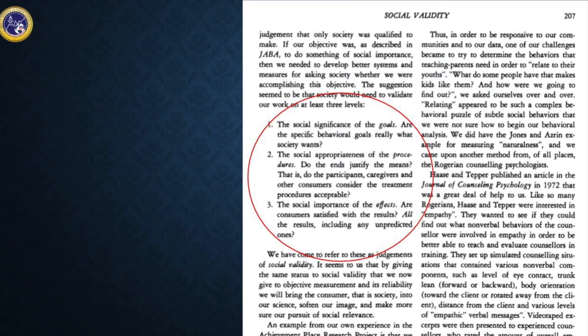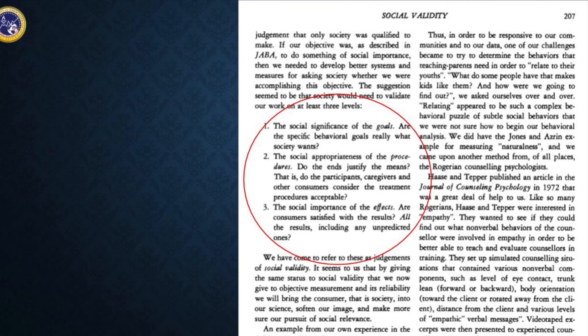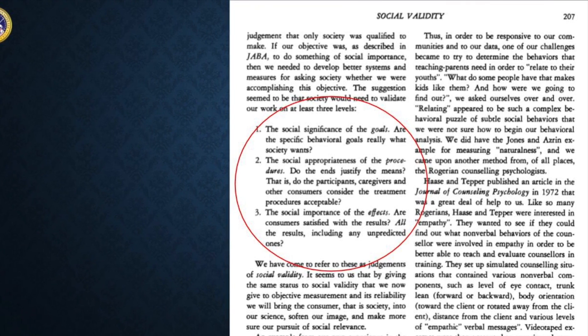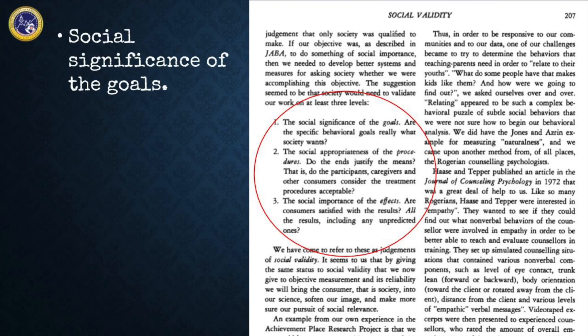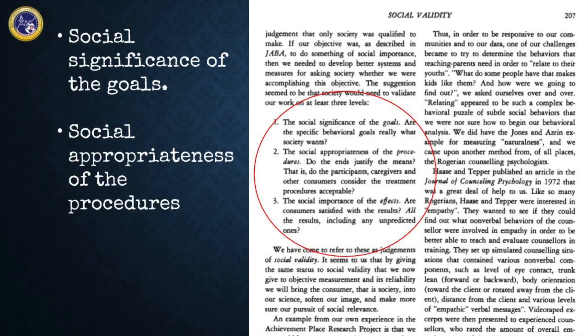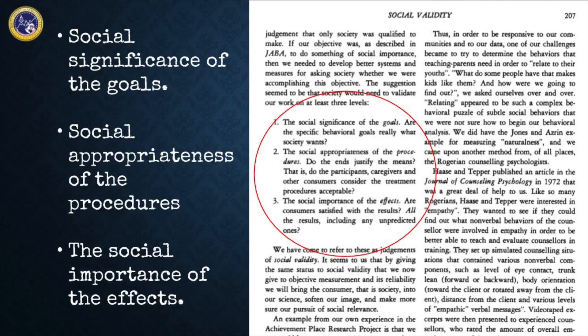When creating a questionnaire to assess social validity, Wolf in 1978 suggested that we evaluate the following: the social significance of the goals — are the specific behavioral goals really what society wants? The social appropriateness of the procedures — do the ends justify the means? That is, do participants, caregivers, and other consumers consider the treatment procedures acceptable? And third, the social importance of the effects — are the consumers satisfied with the results, including any unpredicted ones?